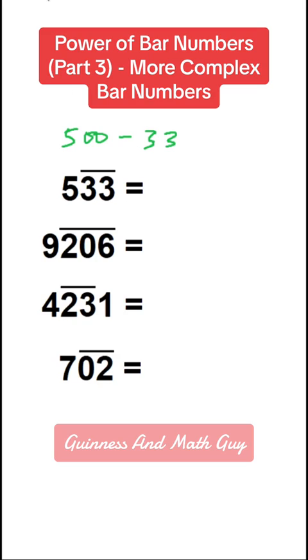The easiest way of doing that subtraction is we just decrease 1 from this 5. So let's decrease 1 from this 5 to make it 4, and then we apply the formula all from 9 and the last from 10 on this number. 3 from 9 is 6 and this 3 from 10 is 7, and that's your answer 467.